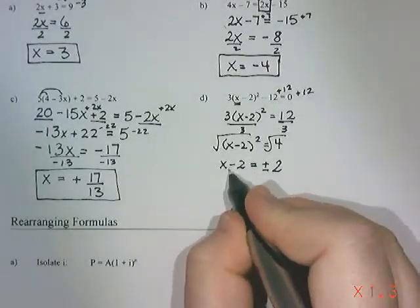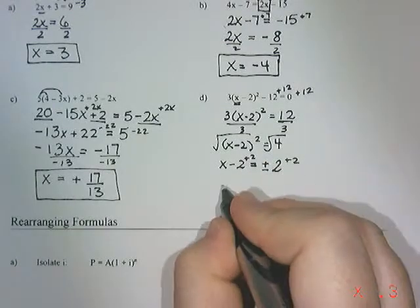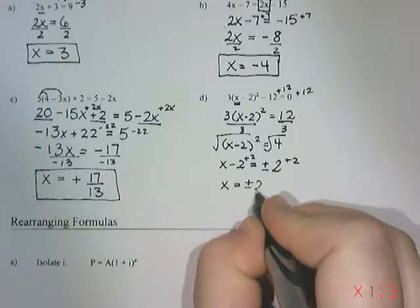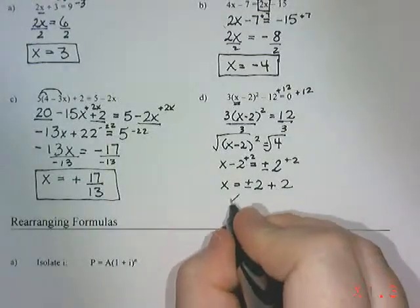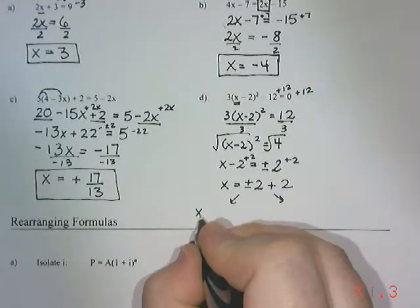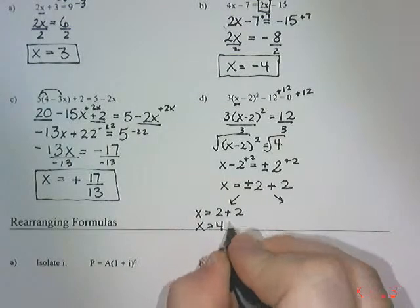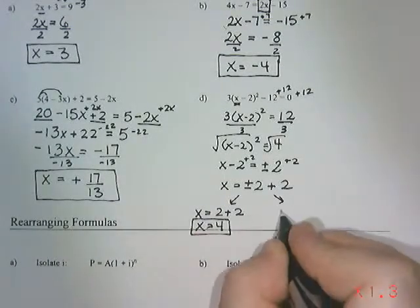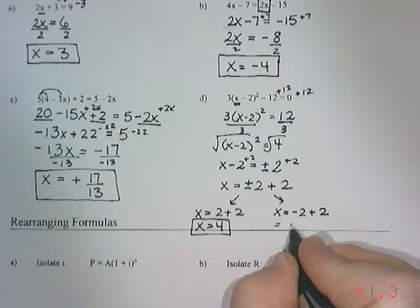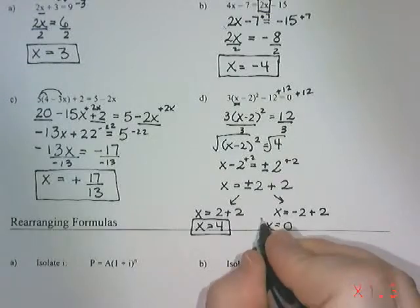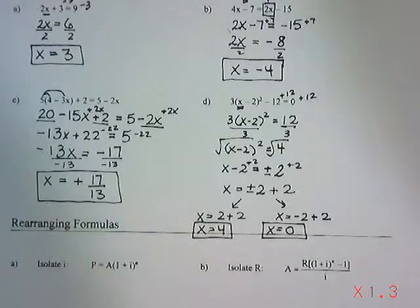And then we're going to finish it off by moving that negative 2 over by adding 2. So I'm going to get plus or minus 2 plus 2, which tells me I'm actually going to get two answers. One where I do the positive 2, so I'm going to have 2 plus 2, which is 4. And one where I have the negative, so negative 2 plus 2, which is 0. So I actually have two answers here. I have a possibility of 4 and a possibility of 0. And that's our equation solving.